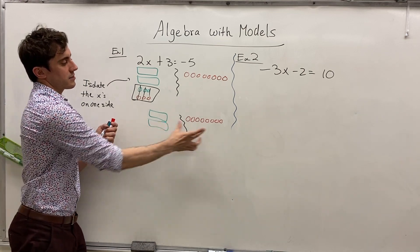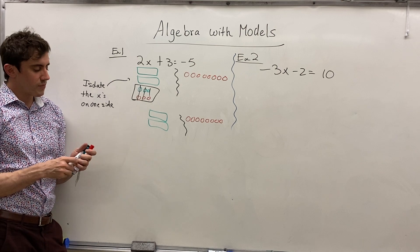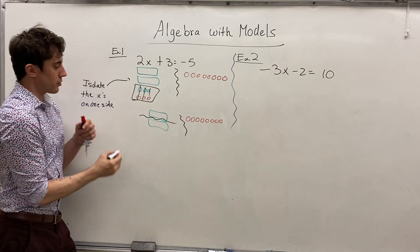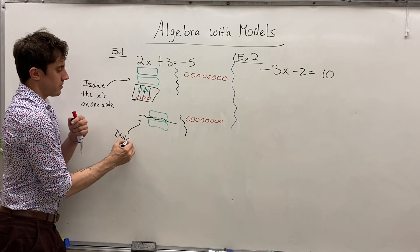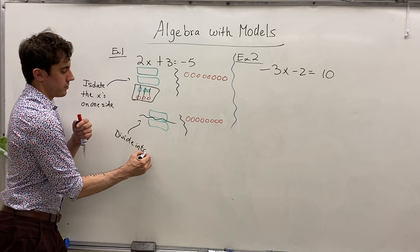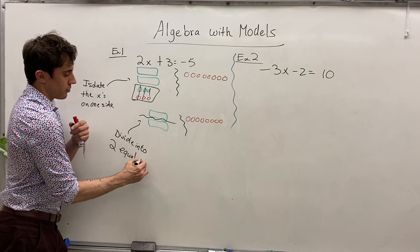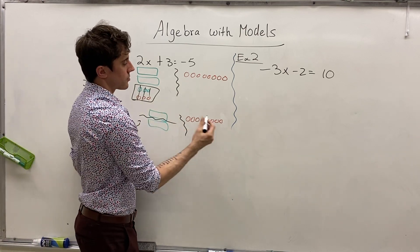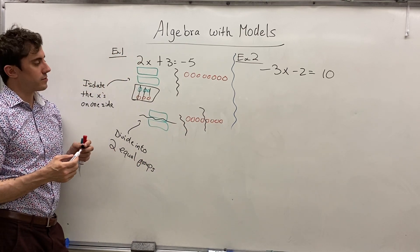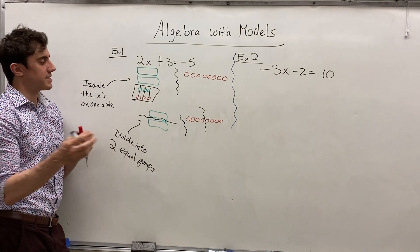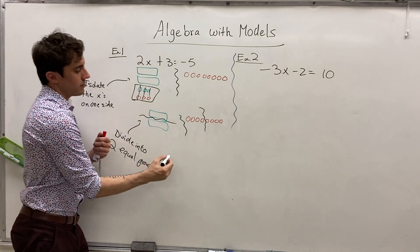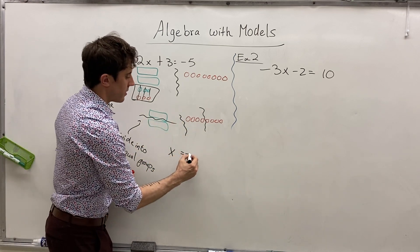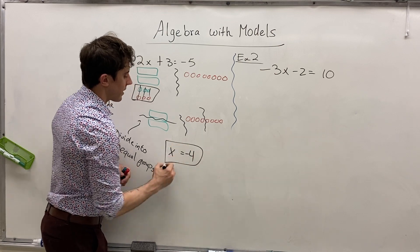That gives us two x equal to negative eight. So if we want to find the value of just one x — one rectangle — we can simply divide into two equal groups, always doing the same thing on both sides. Eight circles means we can divide them evenly with four apiece. In each group there is one green rectangle, so one x, and on the other side in each group there are four red circles. So we find our solution: x is equal to negative four.